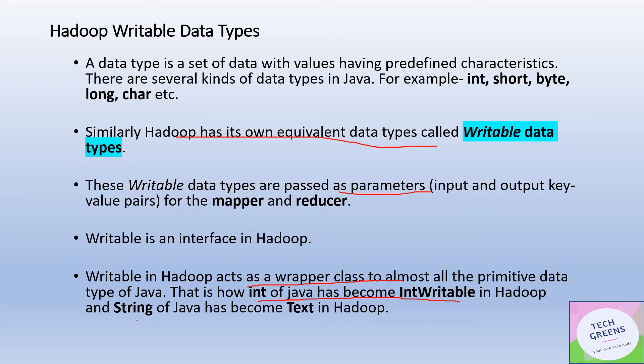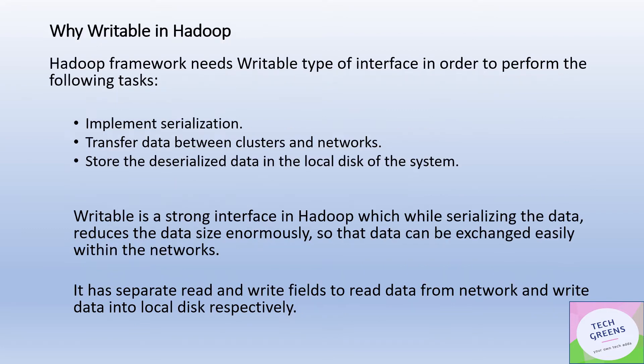The writable interface provides a wrapper to all the primitive data types available in Java. For example, int in Java becomes IntWritable in Hadoop; String in Java becomes Text. In a nutshell, the data types in the Hadoop world are called writable data types because they all implement the Writable interface.